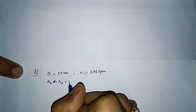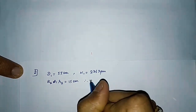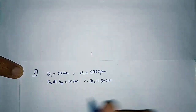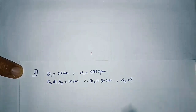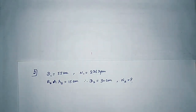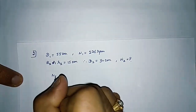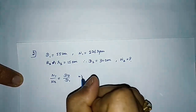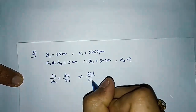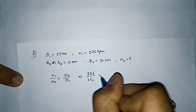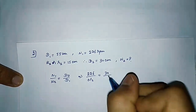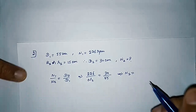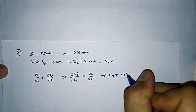Driven pulley radius is given as r2 equal to 15 cm. From this we can find out its diameter by multiplying by 2, which is 30 cm. We need to find out its speed in rpm, that is n2. So n1 by n2 is equal to d2 by d1. Substituting: 276 divided by n2 equals 30 divided by 55. After calculating we get n2 as 506 rpm.